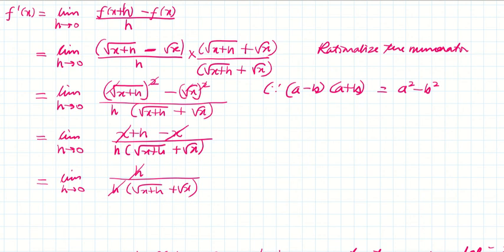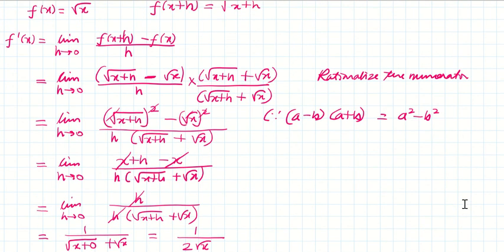There's a sign mistake - I'm sorry, there's a plus sign over there. So √x + 0 + √x - that's 1/(2√x). So if your function is f(x) = √x, its derivative is 1/(2√x).